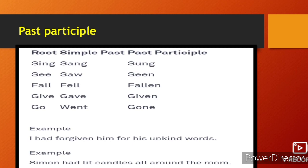Past participle examples — root form, then past, then past participle: sing, sang, sung; see, saw, seen; fall, fell, fallen; give, gave, given; go, went, gone. For example: 'I had given him for his unkind words.' Also: 'Simon had lit candles all around the room.'